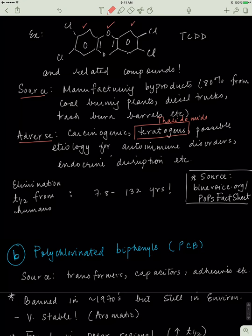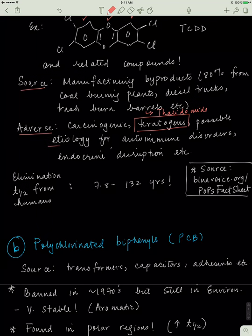A teratogen is something that can result in a mutation or deformity in a fetus. I think a lot of people are familiar with thalidomide, given to women who were pregnant and had morning sickness. Later they started seeing that women who took this medicine, their children would develop limb deformities. They can also cause various autoimmune disorders, endocrine disruptions, etc.